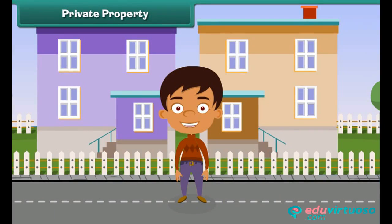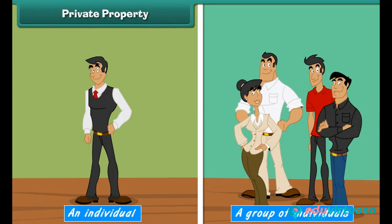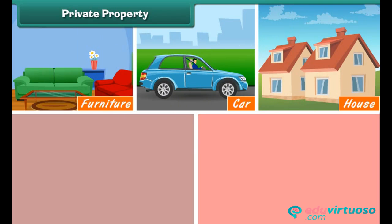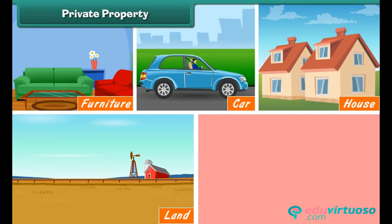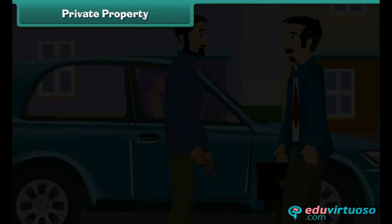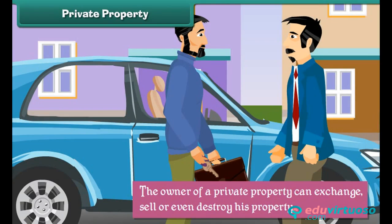Private property is property owned by an individual or a group of individuals. For example, furniture, car, house, land, and jewelry are all private properties because they are owned by a single individual or a group of individuals. The owner of a private property can exchange, sell,